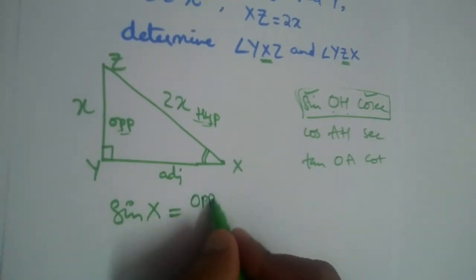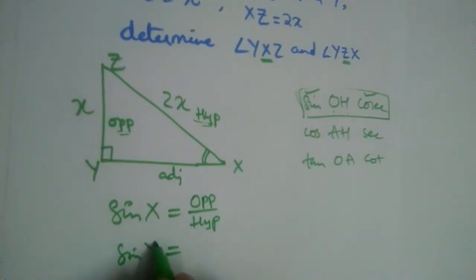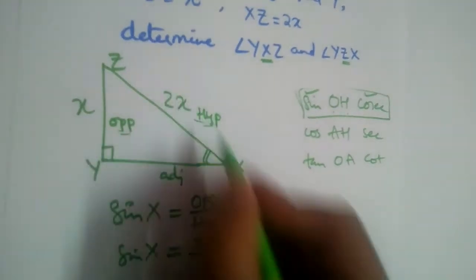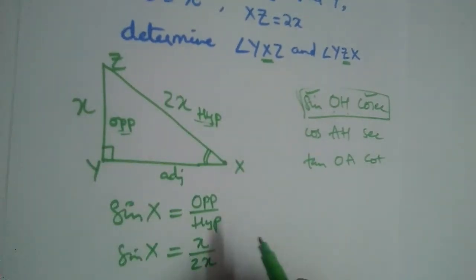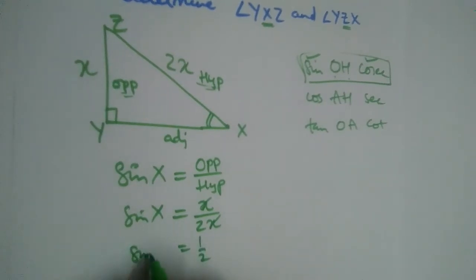Sine X is equal to what is the formula? Opposite by hypotenuse. So sin X is equal to what is the opposite side? x, small x, divided by 2x. Hypotenuse is 2x. If you cancel this, we will have 1 by 2. So sin X is 1 by 2.